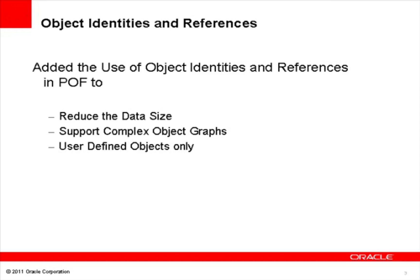For example, when a large number of sizable objects are created multiple times, using references avoids encoding the same object multiple times and helps reduce the data size. Examples of complex objects are objects with circular references in nested objects.